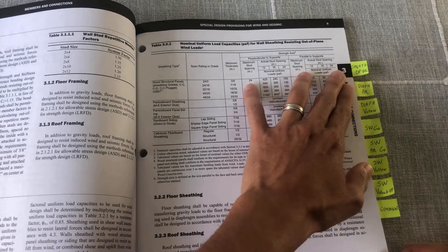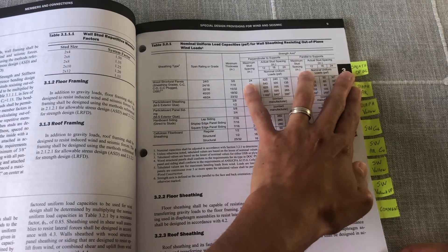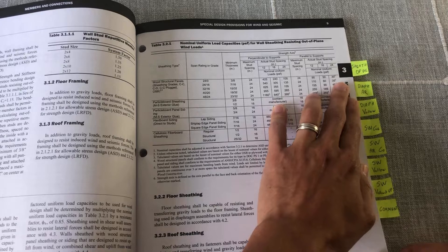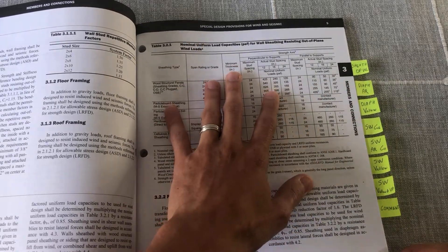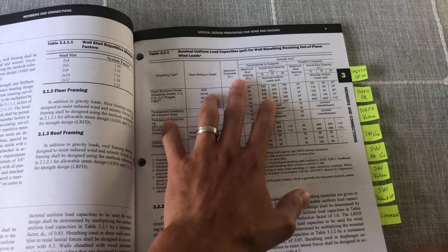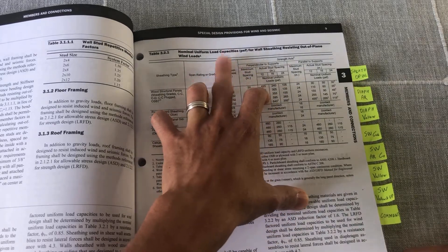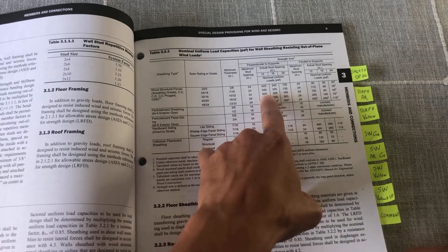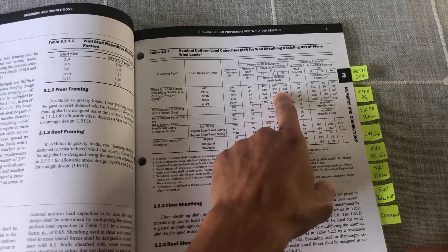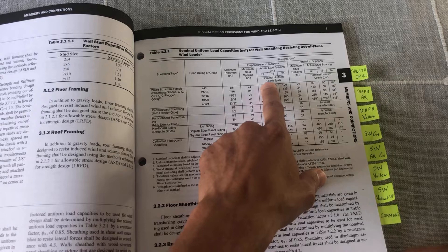First, for walls for out-of-plane load or out-of-plane wind load, you have this table here that you can find the capacity of your wall, or nominal uniform load capacities in PSF, which are here - all these different capacities here based on a lot of parameters.